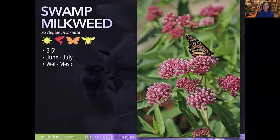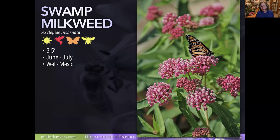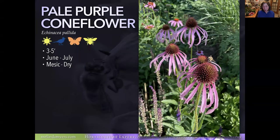Swamp Milkweed is one I find is not as aggressive as Common or Showy Milkweed — it's a clumper. Bigger than Butterfly Weed, it has fragrant pink flowers. The monarch butterfly likes to nectar on the flower, as do other butterflies, bees, and hummingbirds. You can clip off the pods to prevent seeds from spreading where you don't want them. It tolerates moist conditions, as the name 'swamp' suggests — sometimes called Red Milkweed.